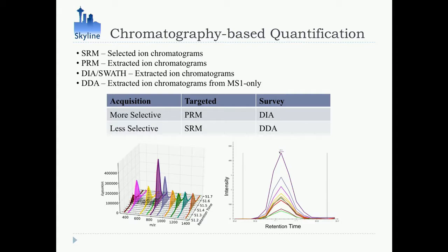Turning to Skyline — the thing I left LabKey to build — I got recruited by Mike McCoss and we started with selected reaction monitoring, targeted proteomics, and expanded into what I now call chromatography-based quantification, supporting four different acquisition methods. All chromatography-based quantification explores a three-dimensional space: intensity, mass-to-charge ratio, and retention time. A chromatography-based system extracts these into chromatograms — slices across full spectra at certain mass-to-charge ratios — and mass spectrometrists use the area under these curves as a proxy for the quantity of the analyte, whether peptide or small molecule.